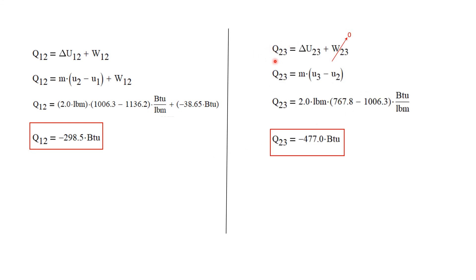The same energy balance applies for process two to three: Q_23 equals delta U for process two to three plus the work done by that process. Since the work is zero for this isovolumetric process, Q_23 equals mass times (U_3 minus U_2). Plugging in the mass of two pounds mass and the values of U_3 and U_2, the heat transfer for process two to three is negative 477 BTUs.